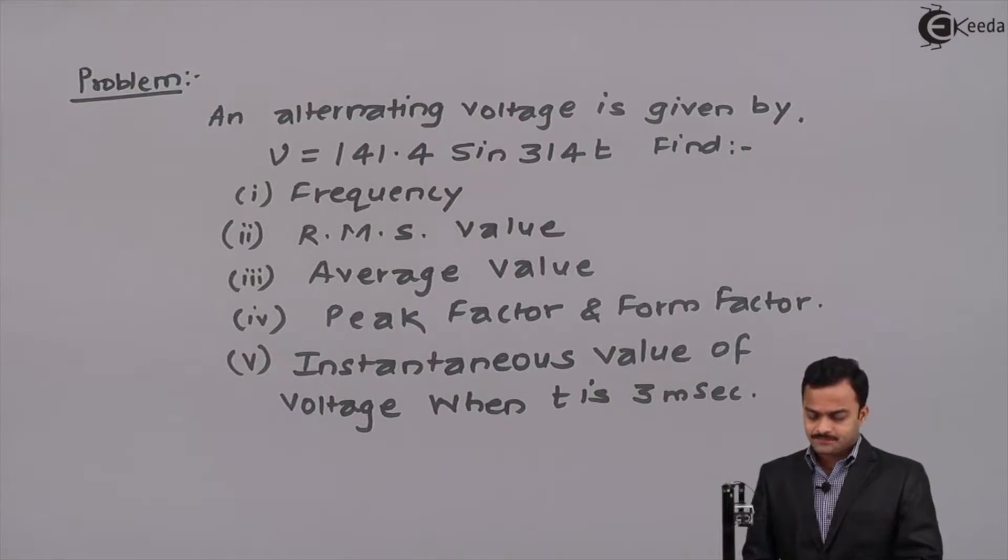The problem is like this: An alternating voltage is given by V equal to 141.4 sin 314T. Find frequency, RMS value, average value, peak factor and form factor and also calculate instantaneous value of voltage when T equal to 3 milliseconds.